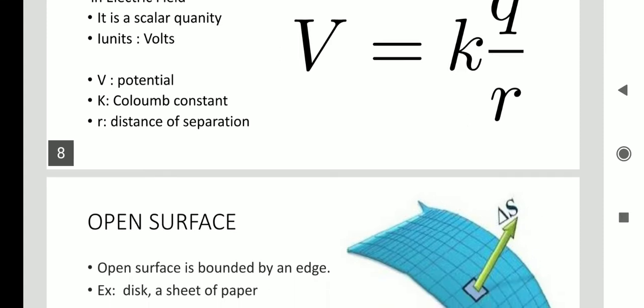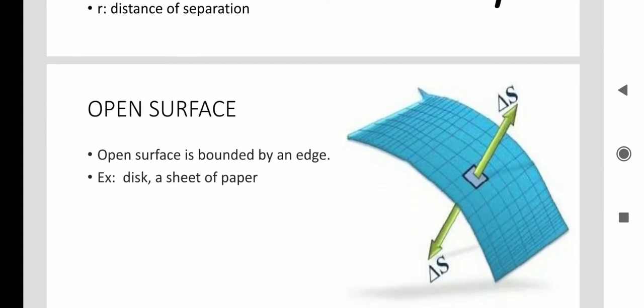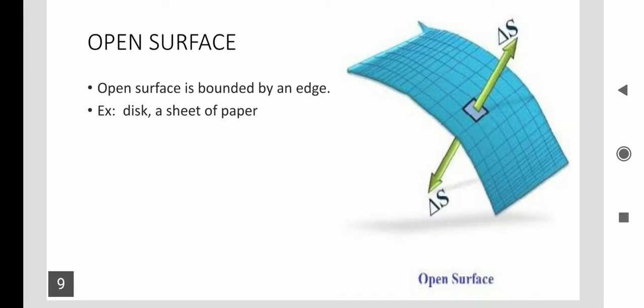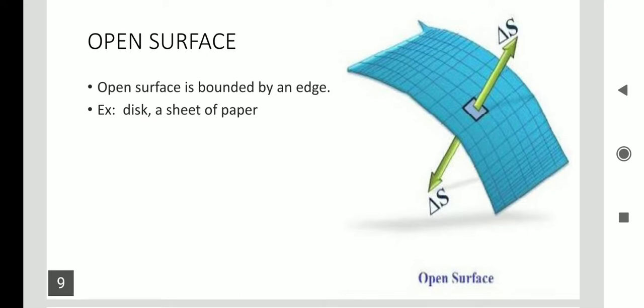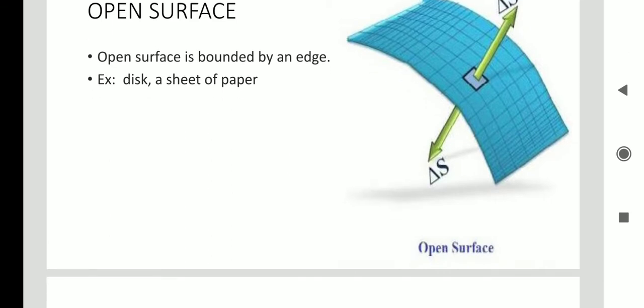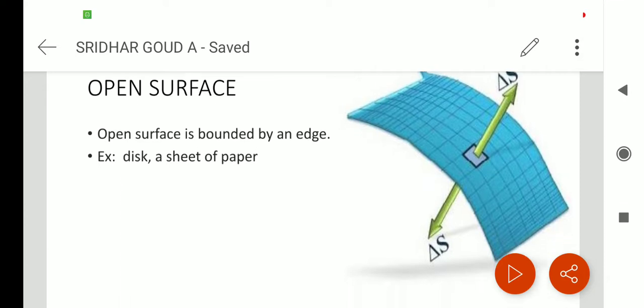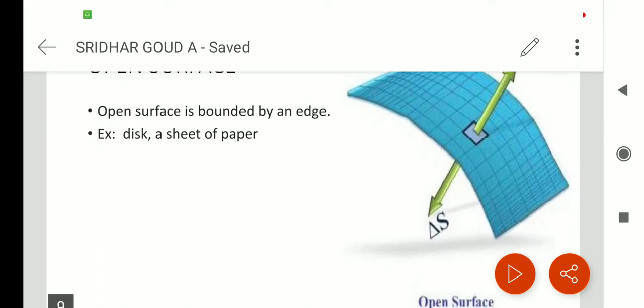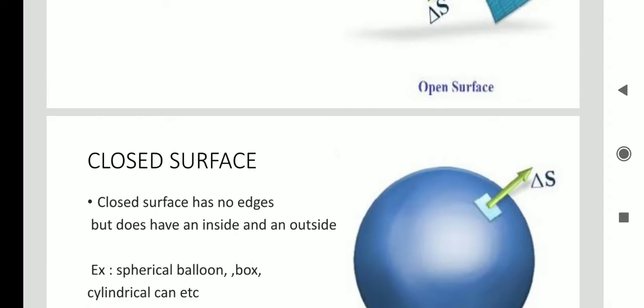The formula is V = kq/r, where V is the potential, k is the Coulomb constant, and r is the distance separation. Now consider surfaces — there are two types: open and closed. An open surface is bounded by an edge, for example a disc or a sheet of paper. The sheet of paper shows open edges, so it is called an open surface.